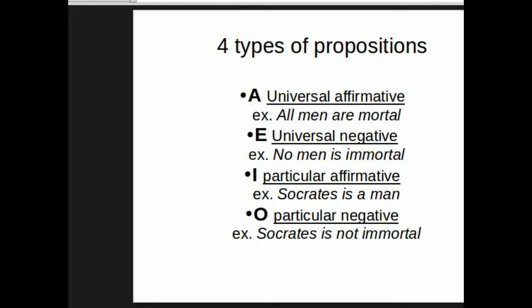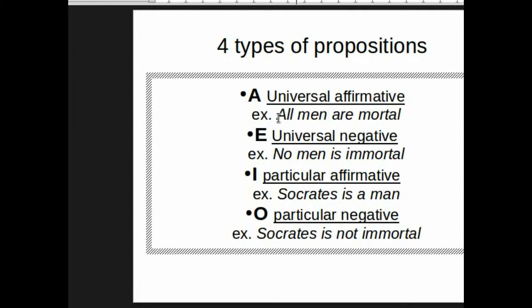If we look at these propositions, for example, the A proposition, we have all. We have man. Man is the subject. Then you have mortal, which is predicated of the subject. So it talks about the subject, and the verb to be.